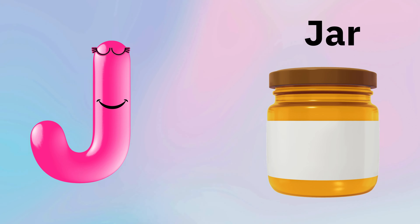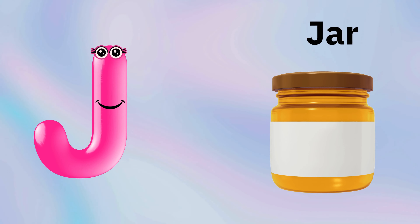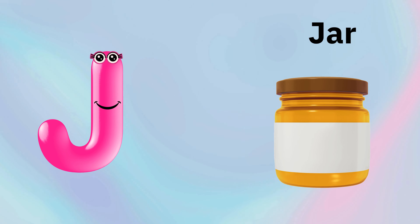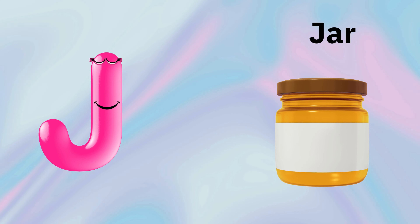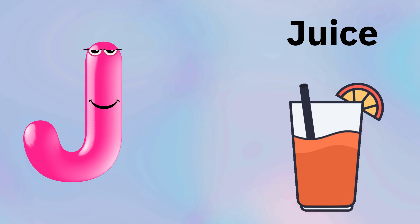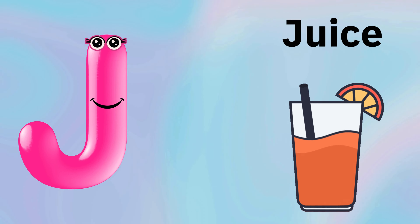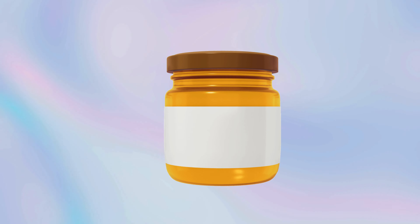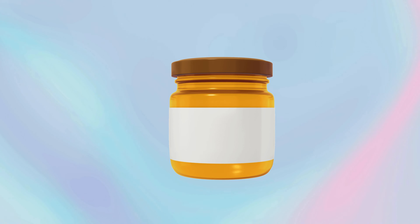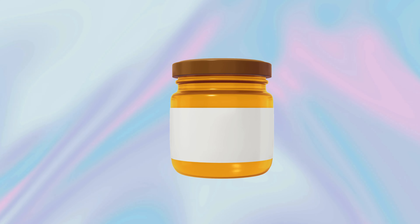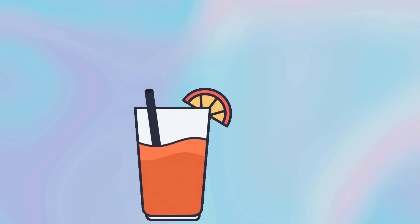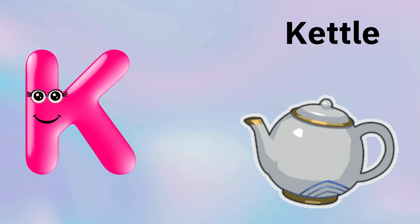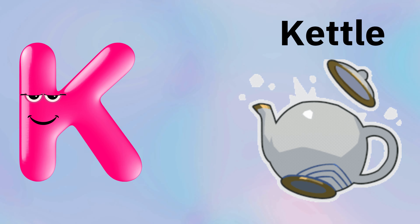J is for jar, j-j-jar. J is for juice, j-j-juice. J is for j-j-j-jar. J is for j-j-j-juice.